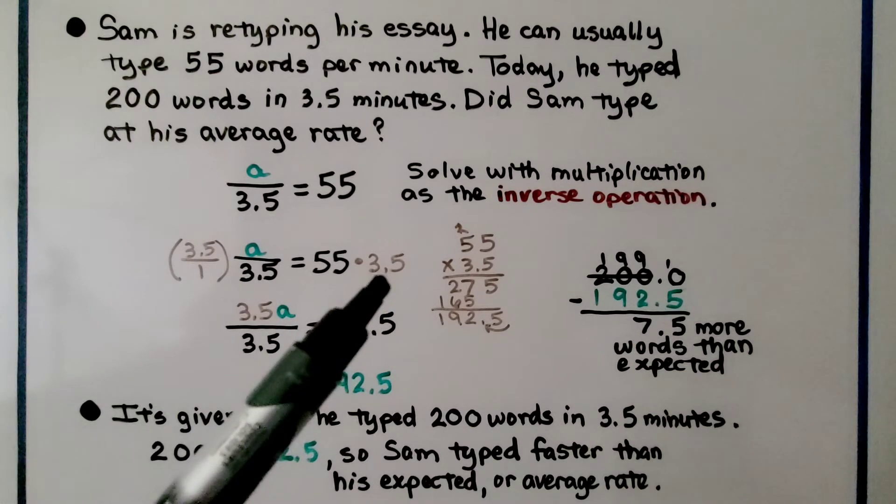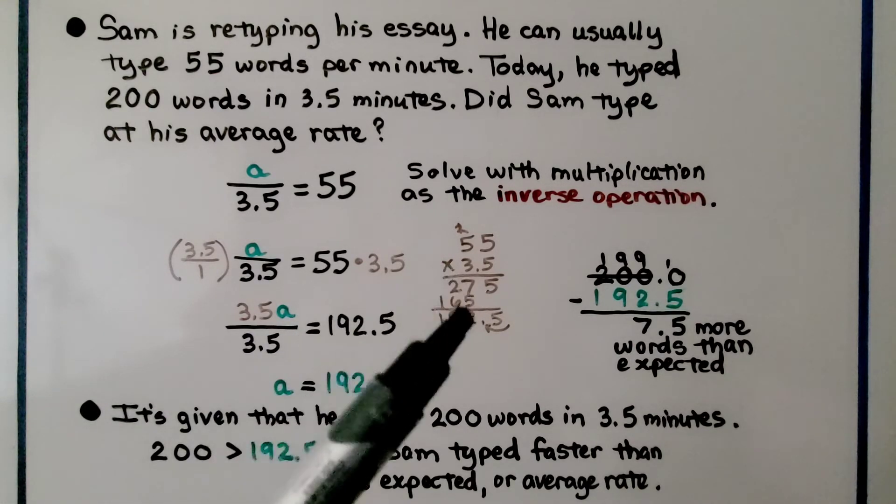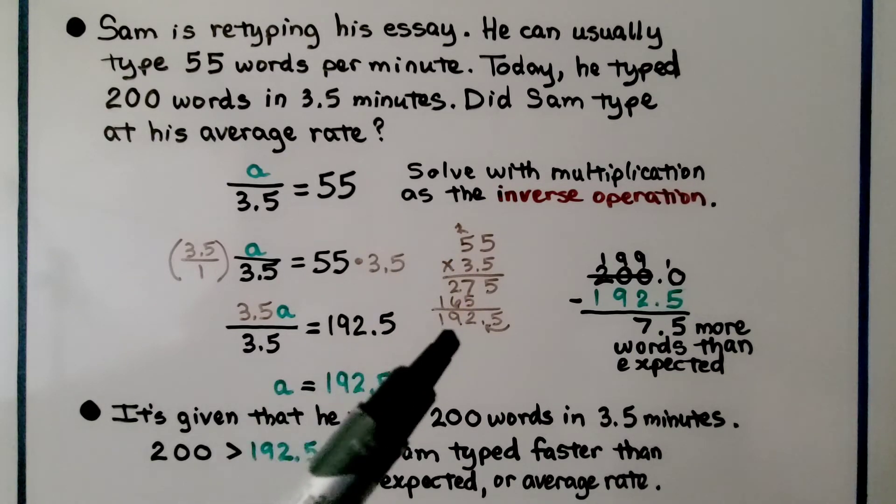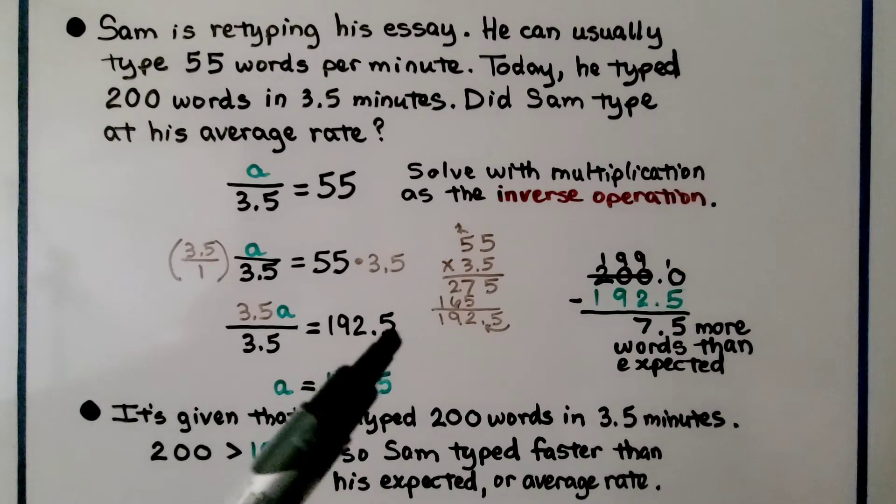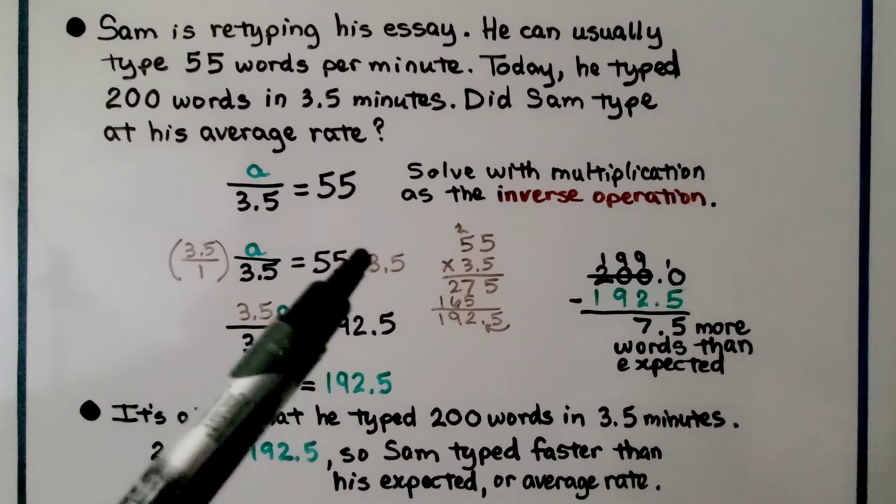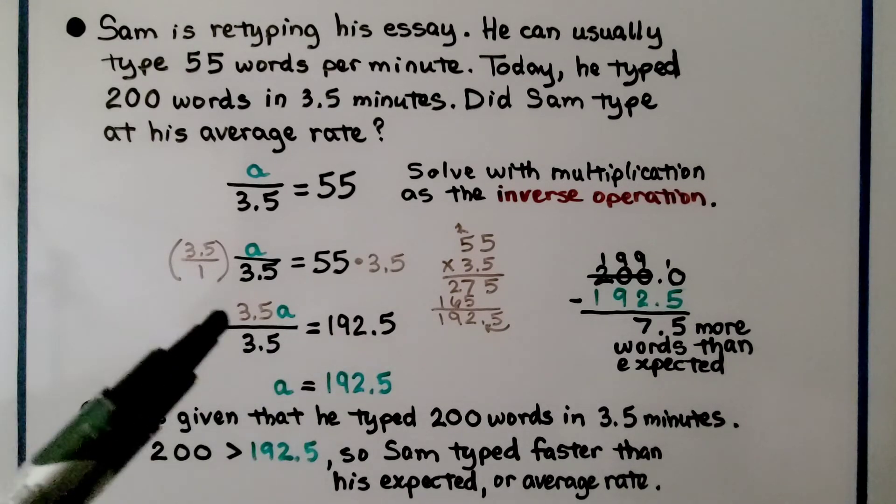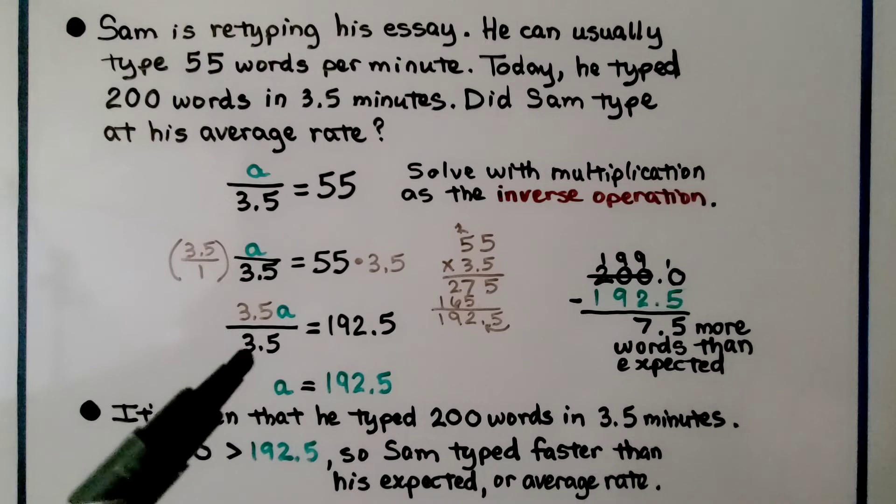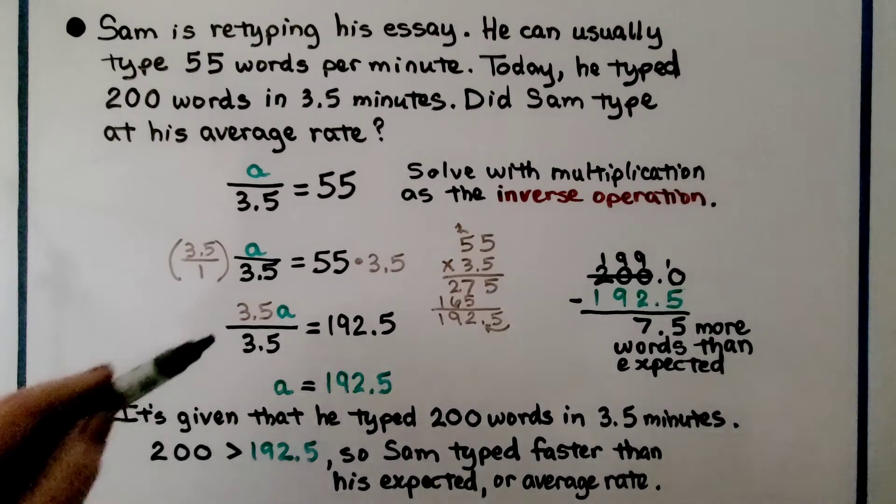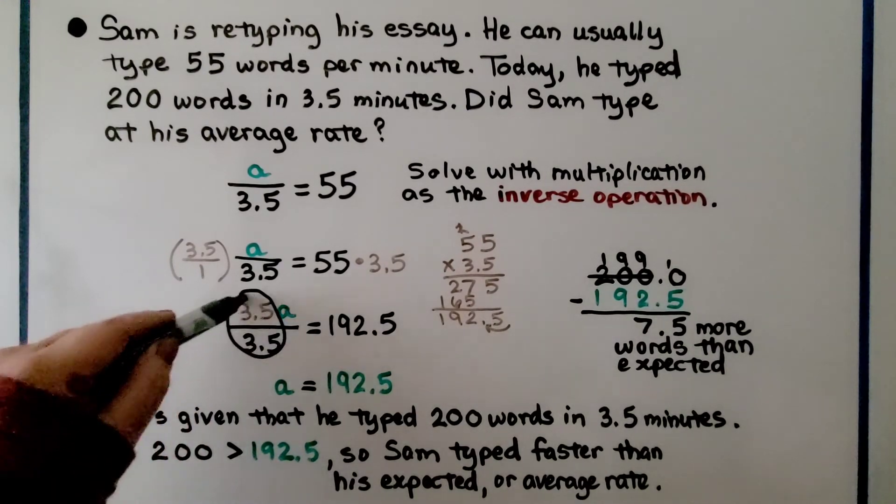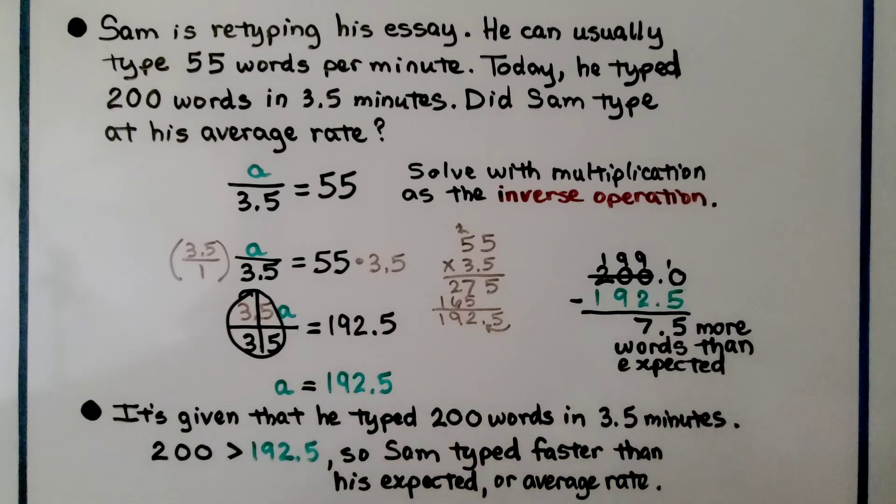Multiplying this side by 3.5, we get 192.5. On the other side, 3.5A over 3.5 simplifies to 1, so A equals 192.5. It's given that he typed 200 words in 3.5 minutes.